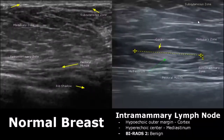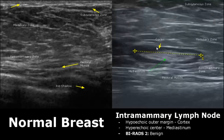Here we have an image of an intramammary lymph node. They have a hypoechoic outer cortex and a hyperechoic central mediastinum, which is hyperechoic usually due to fat. They are classified as BIRADS 2.